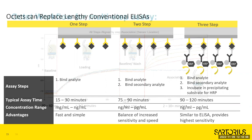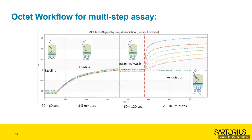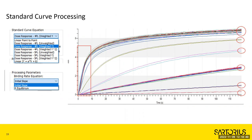A typical two-step assay has a quick baseline followed by loading. You want the sensor loading to be consistent so you have the same number of binding sites for your second step. Then you test association with your standard curve material. This can all be done in about 12 to 15 minutes. Once you have the association data, you go to data processing. The software offers 4-parameter, 5-parameter, or linear - weighted or unweighted - fitting options.